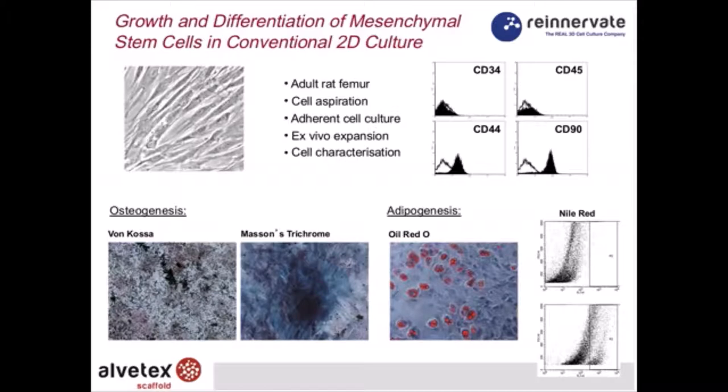We're confident that the cells we're working with have a fusiform, fibroblastic morphology as shown in the phase image, and they can differentiate. What we're interested in, of course, is how they perform in Alvitex.